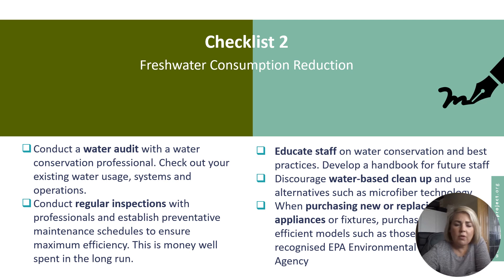Checklist two looks at fresh water consumption and reduction — how you conduct a water audit, regulate inspections, educate your staff, and looks at different equipment and appliances and what you can do there.